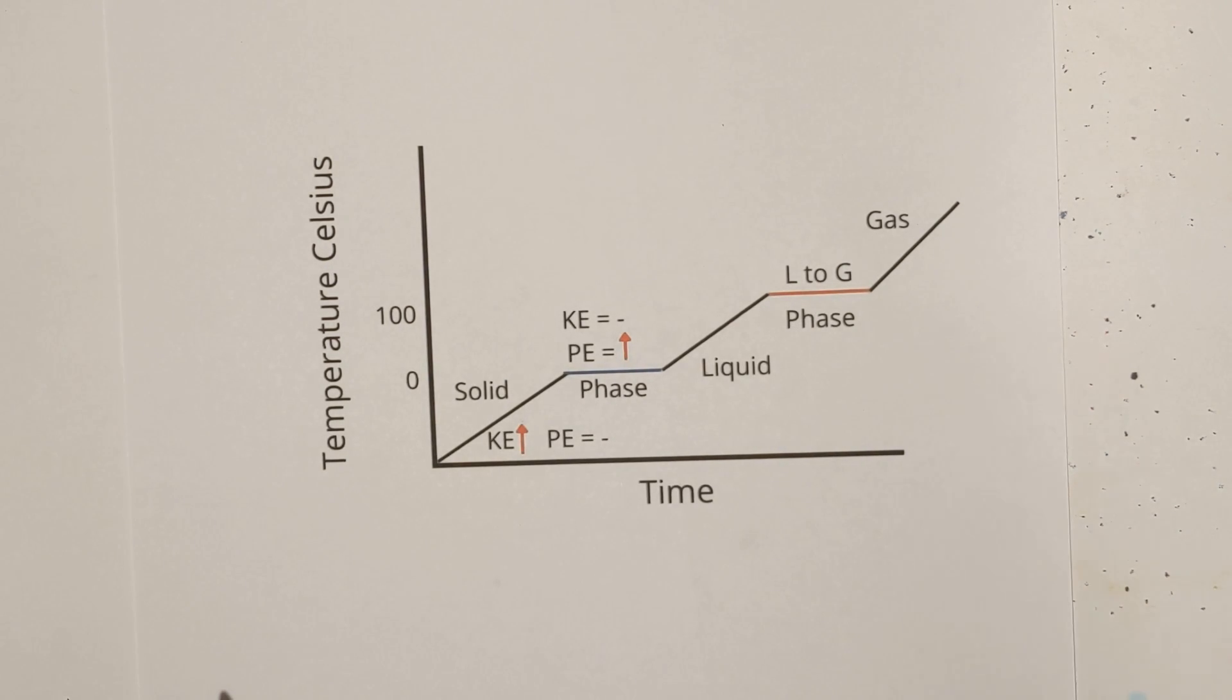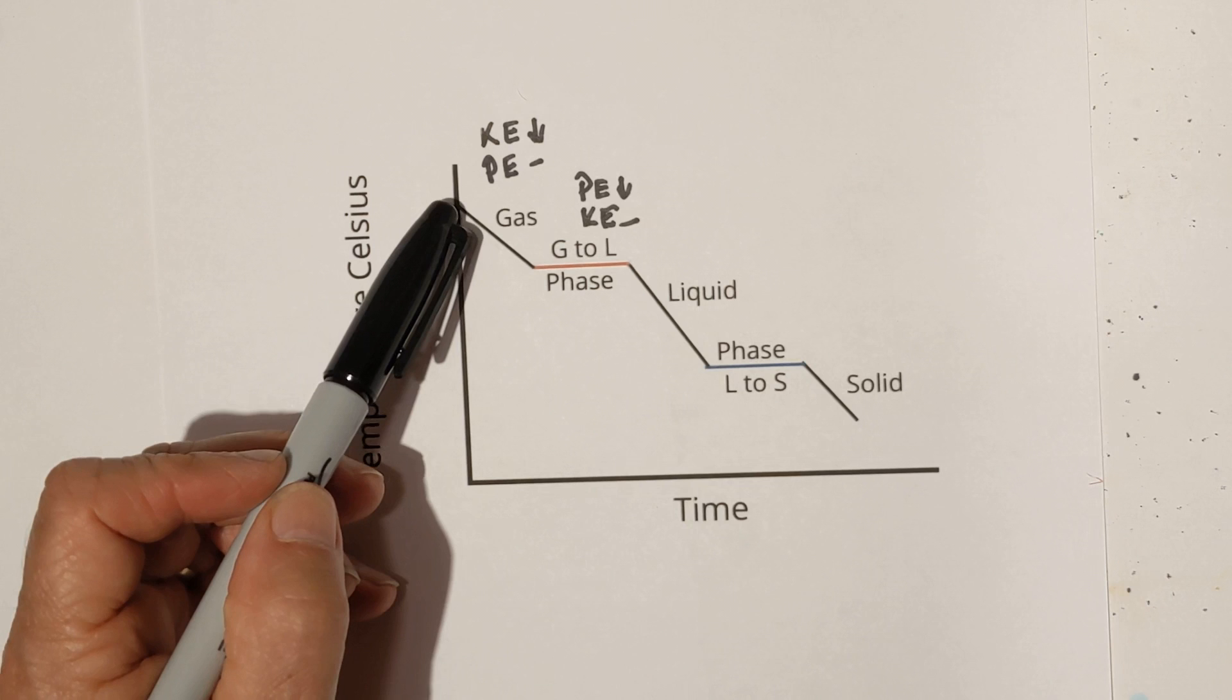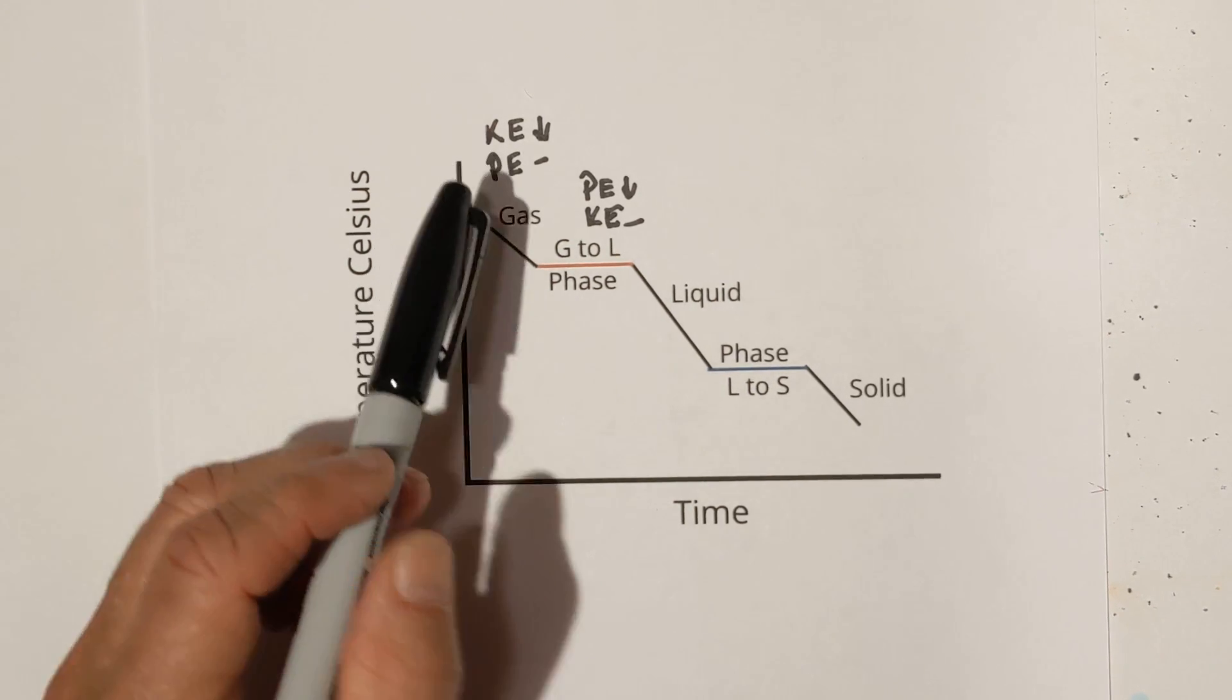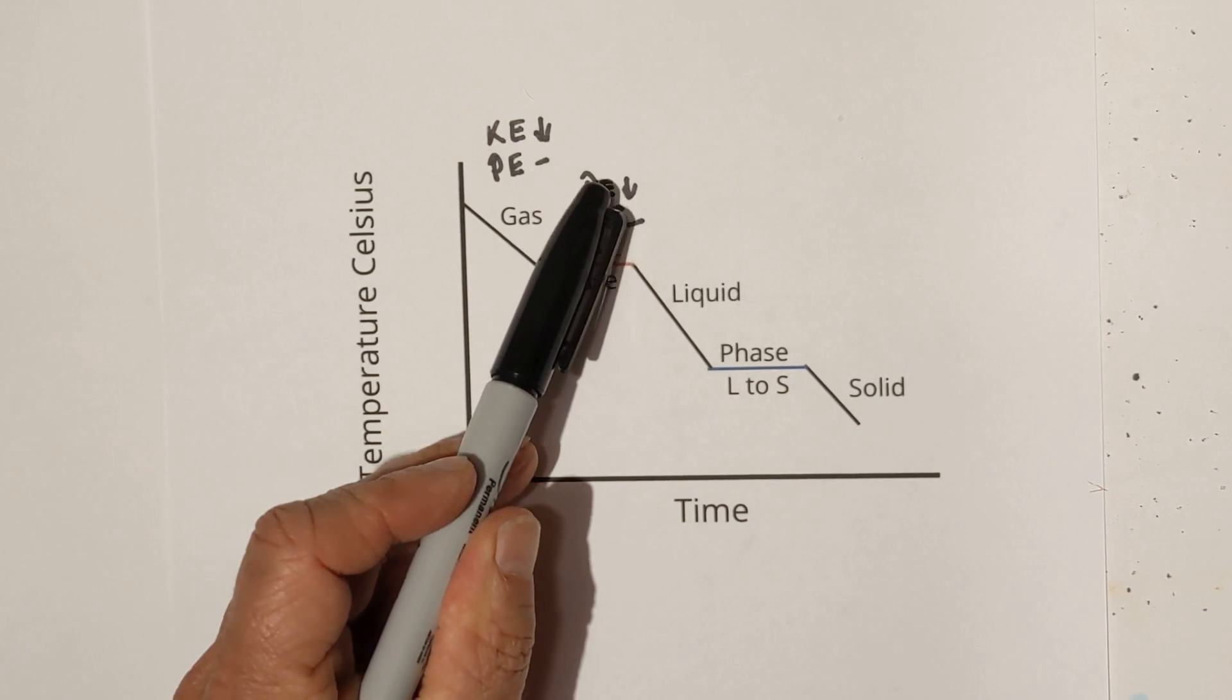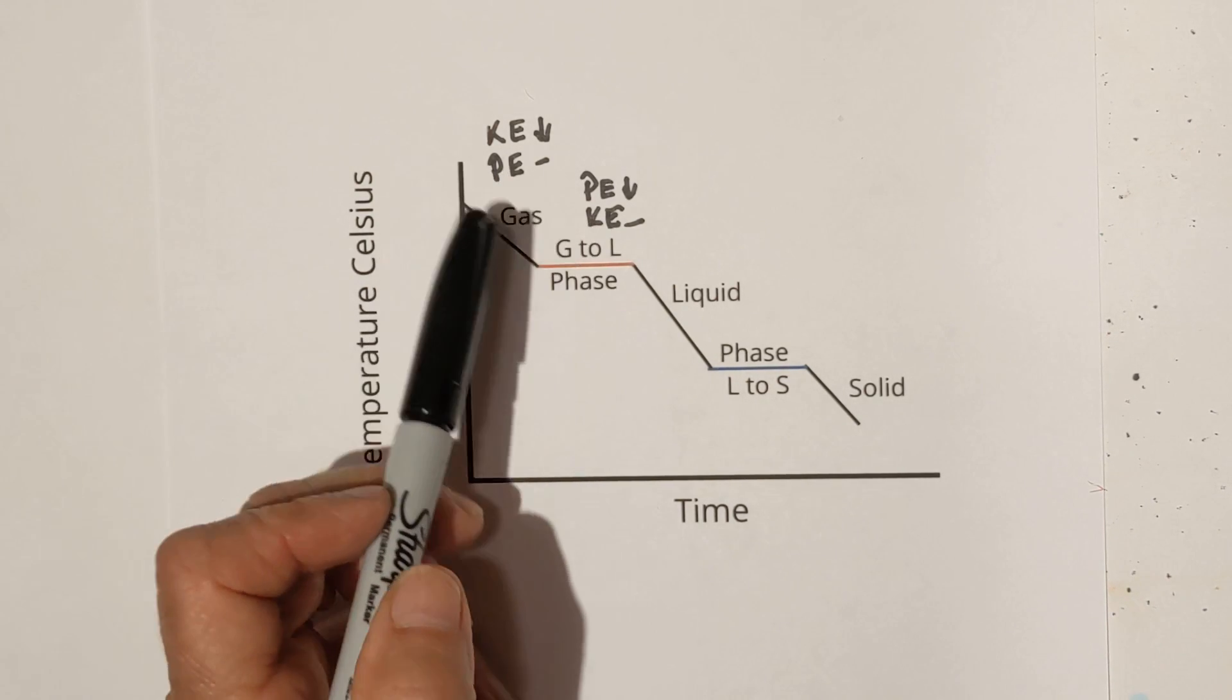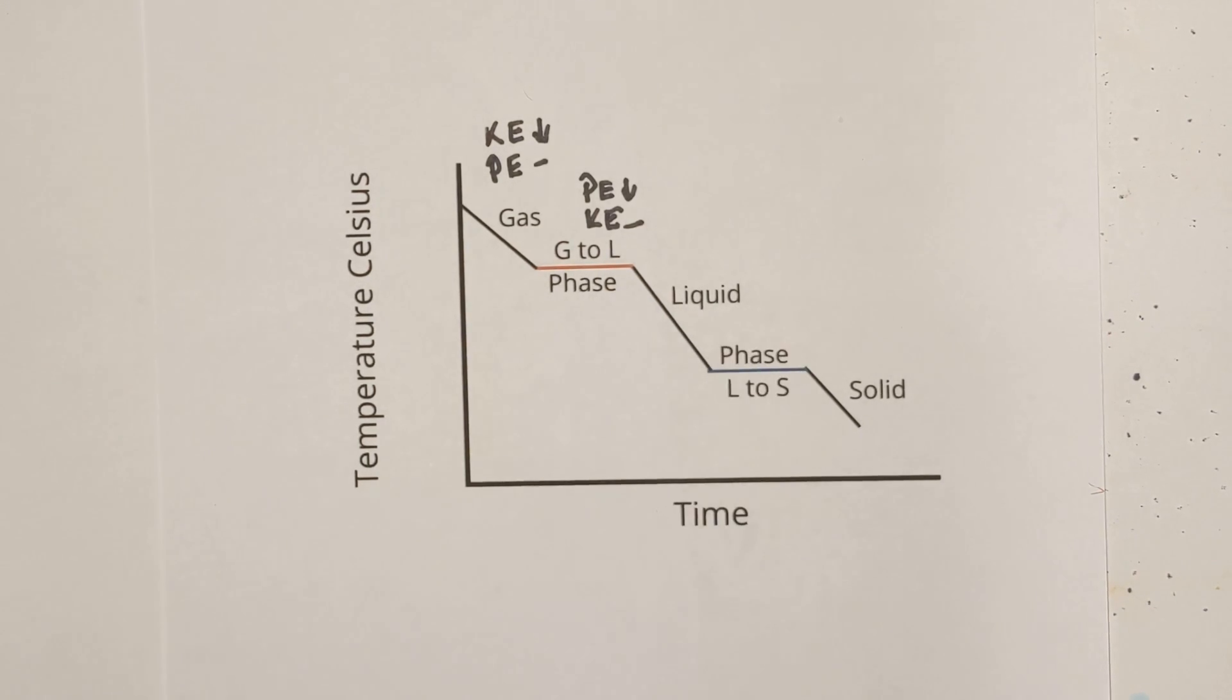Now let's look at it on the cooling side. And now with this cooling curve we kind of have the opposite. This part the kinetic energy is going down, potential energy is neutral. Then during the phase change it's going from gas now to liquid. So the potential energy is going down. Kinetic energy is neutral or constant. Then here kinetic energy is going down. Potential energy remains the same.